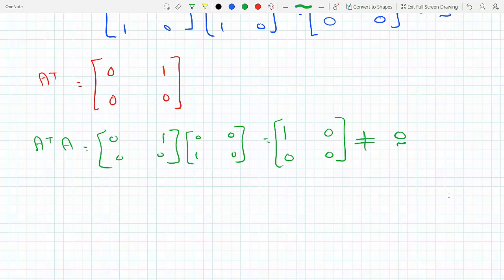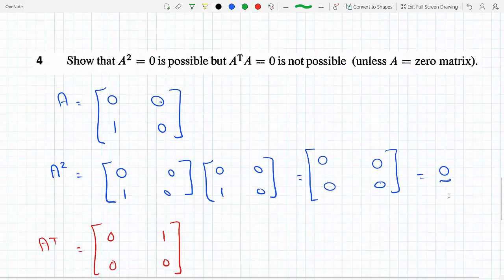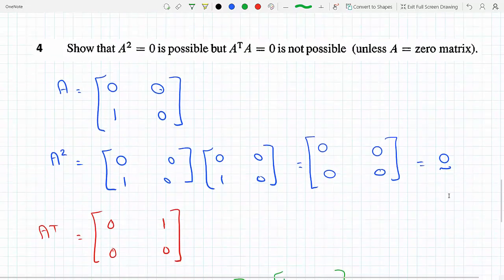This means either the matrix has to be a zero matrix or the columns of A have to be zero, and that's why this happens.